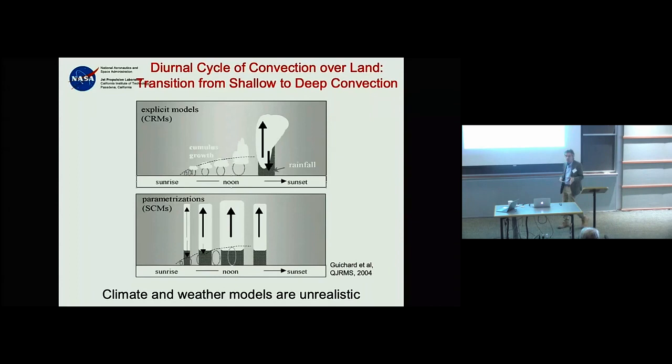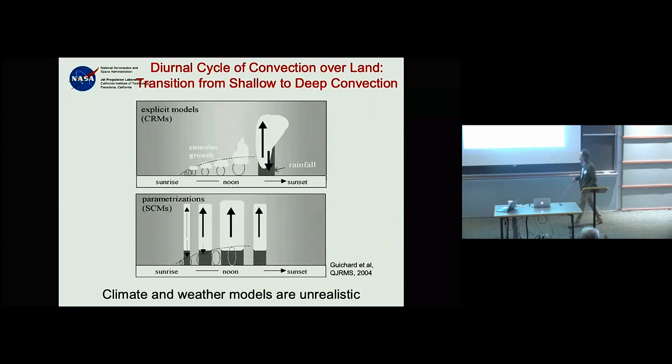A good demonstration of how models struggle with deep convection and convective transitions comes from a paper by Françoise Guichard nearly 20 years ago, comparing cloud-resolving models or LES to single-column versions of climate and weather models.